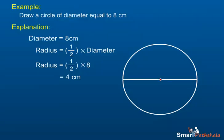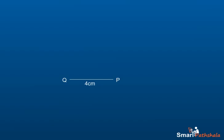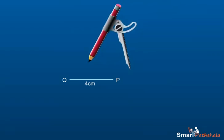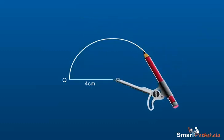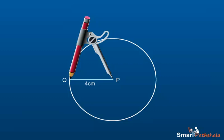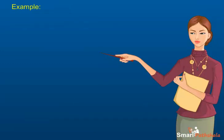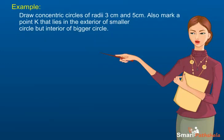Now let us draw this circle. Step 1: Draw a line segment of length 4 cm. Name it PQ. Step 2: Place the pointer of the compasses at P and open it for the required radius PQ. Step 3: Now turn the compasses slowly to get the required circle.